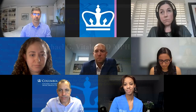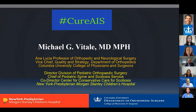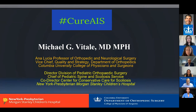My talk is provocatively titled 'Cure AIS.' The question really is: why are we not doing better in this space? Why do so many kids still have scoliosis that progresses? And even if we admit it will not be a never event, are we taking the best care for kids with adolescent idiopathic scoliosis? My main disclosure is that we have a very active center for the conservative treatment of scoliosis, offering Schroth physical therapy and Rigo Chêneau bracing.